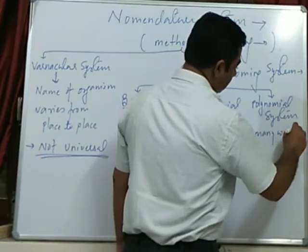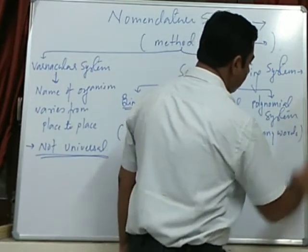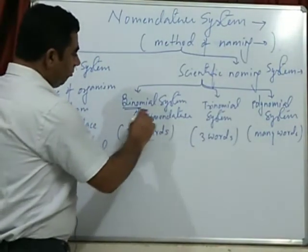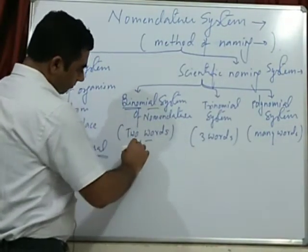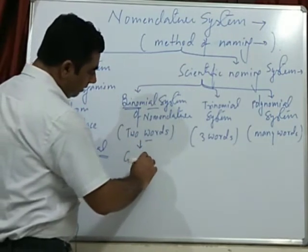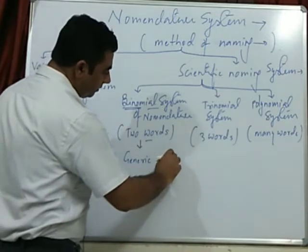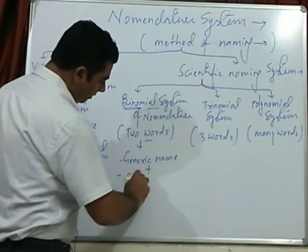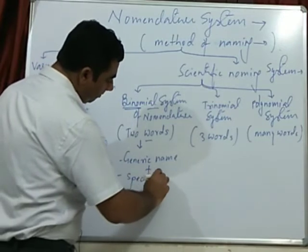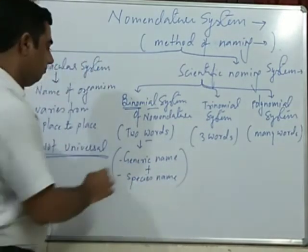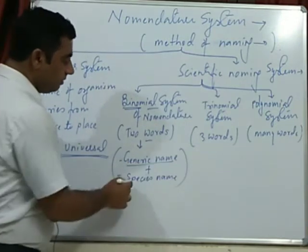Binomial has two words which includes first is generic or genus name, and second one is species name or specific epithet. First one is generic name, second one is specific name.